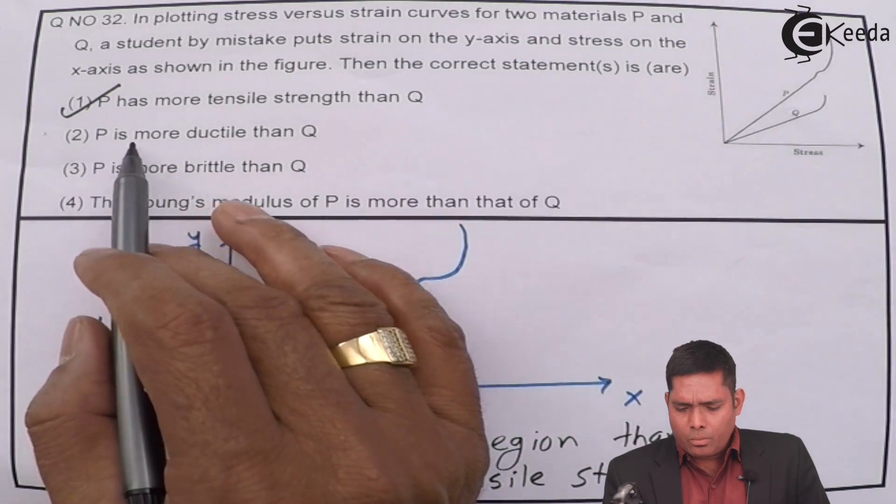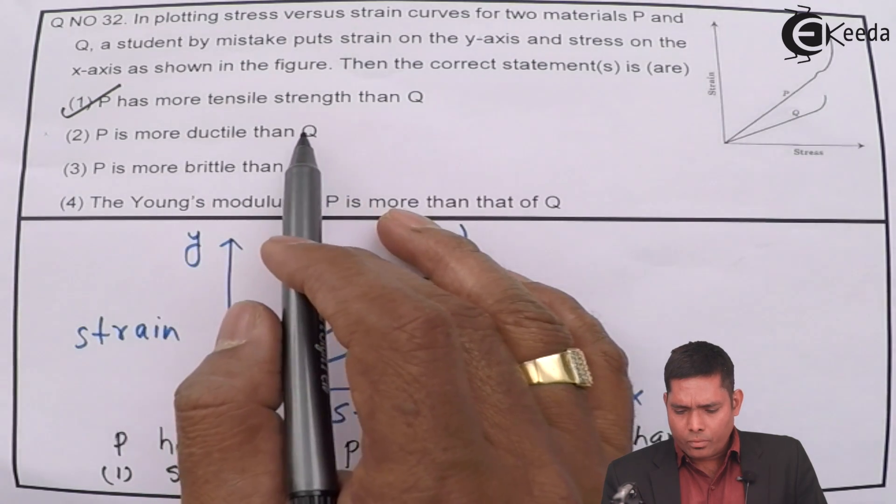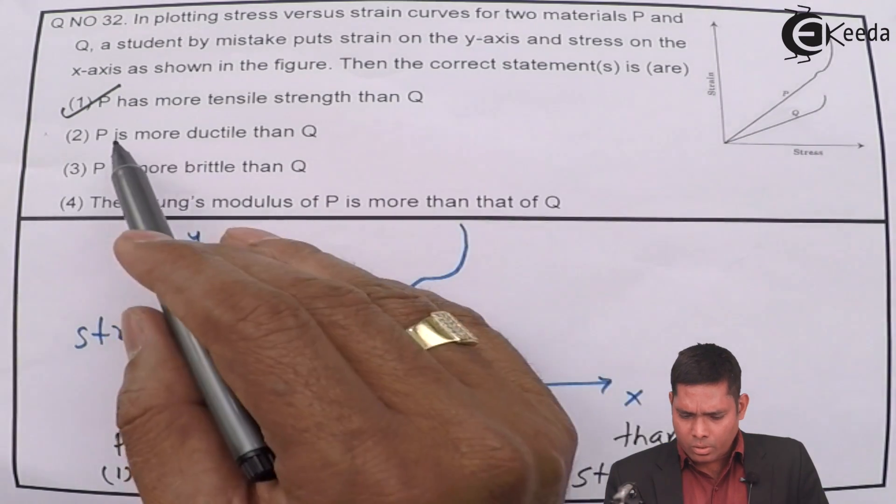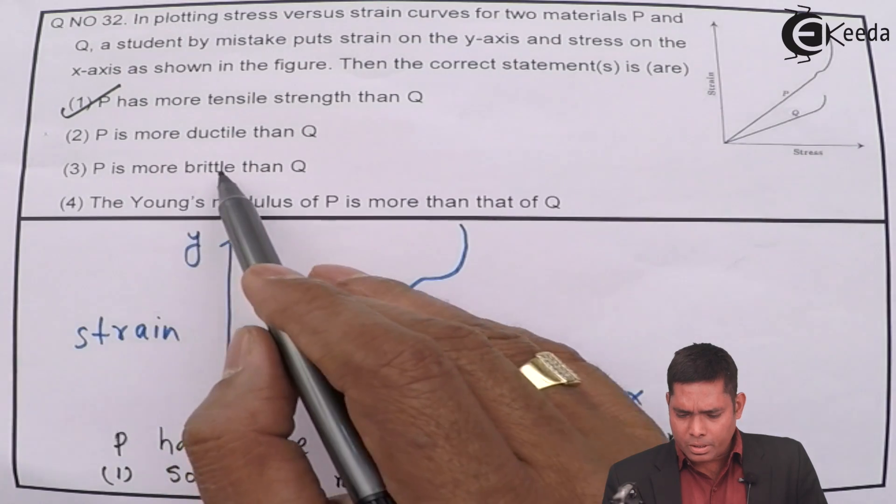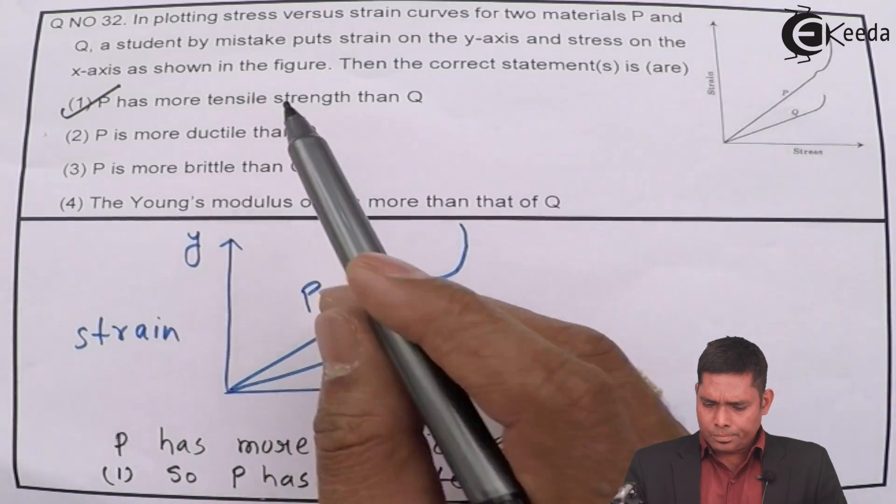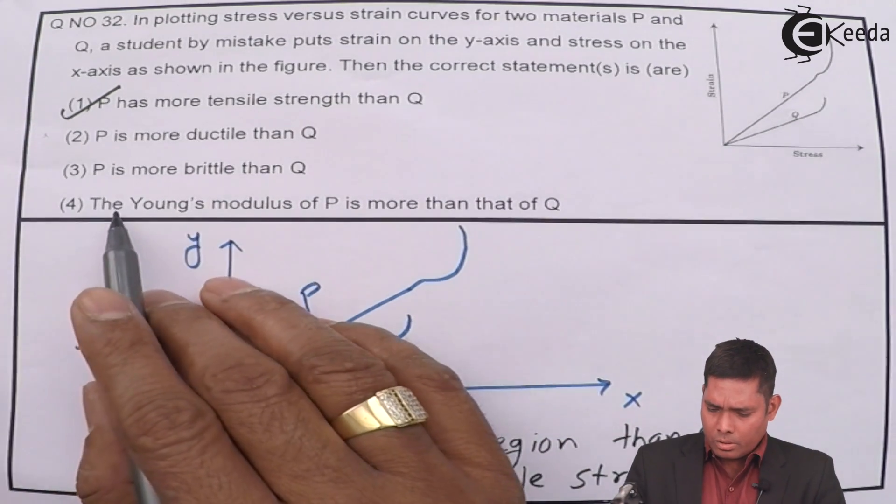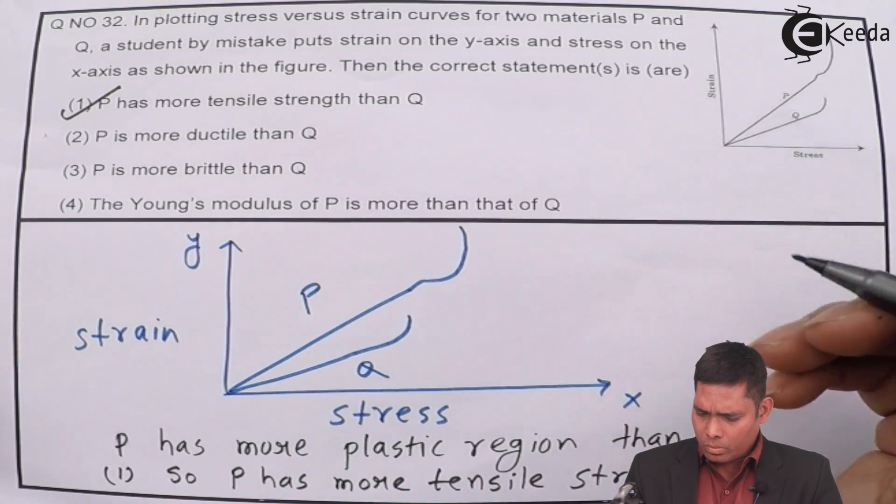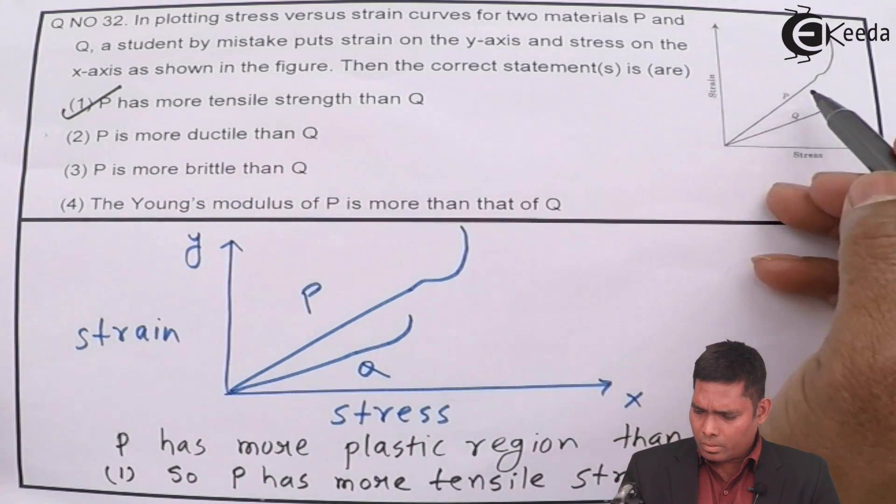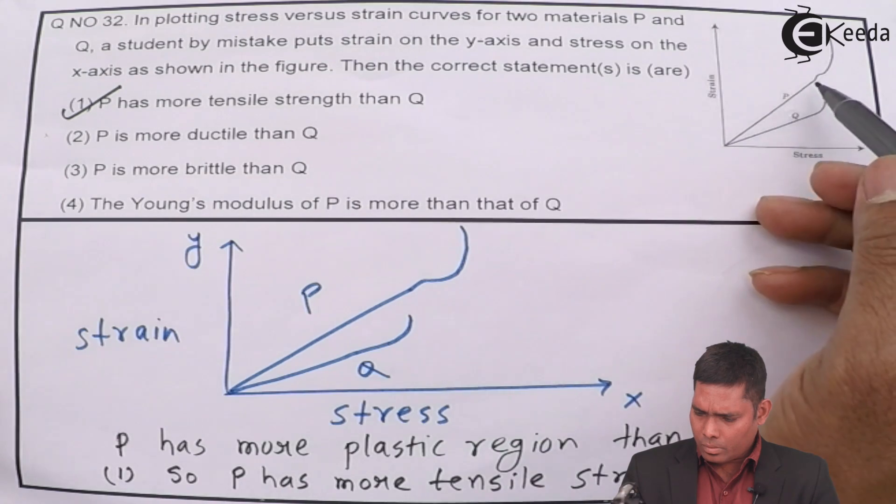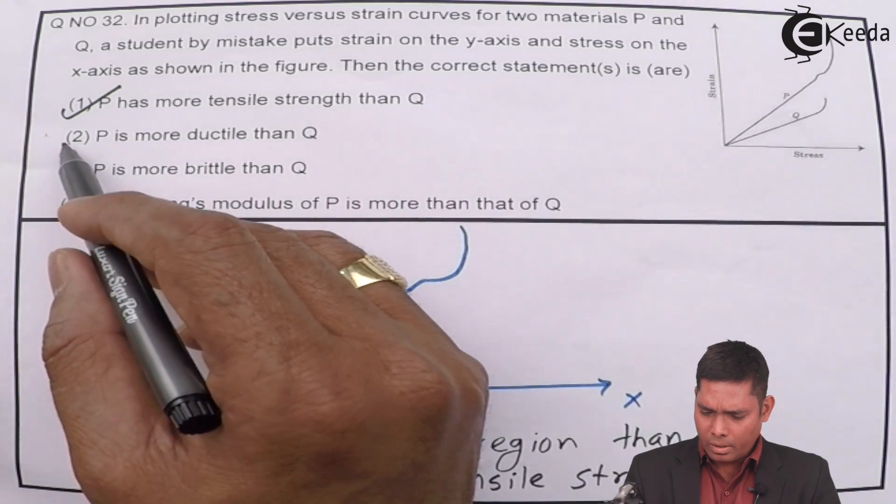Next is P is more ductile than Q. P is more ductile, this is more ductile. It is not true. P is not more ductile than Q. P is more brittle than Q. The Young's modulus of P is more than that of Q. It can be, this is correct. P is more ductile, this is correct.